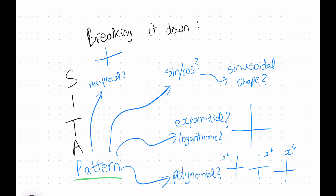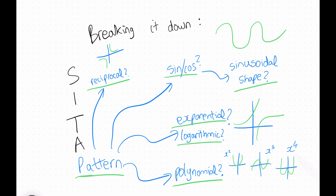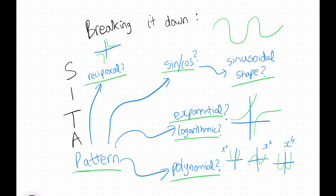Finally, we have P for pattern. This is asking yourself a series of questions to determine the pattern and shape of the function. Is the graph reciprocal? Does it have a sine or cos term, giving it a sinusoidal shape? Is it exponential or logarithmic? Or does it have a polynomial element — a quadratic has a U shape, a cubic has an S shape, and a quartic has a W shape. You're connecting the dots between functions you already know the shape of, using pattern recognition.